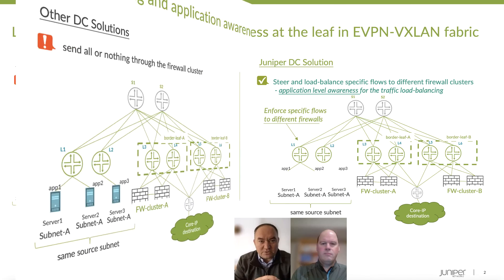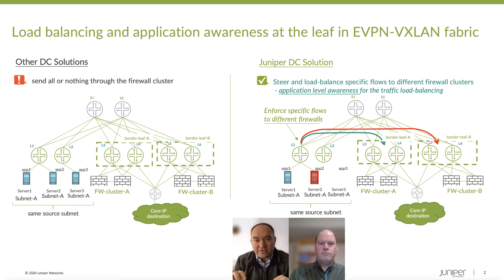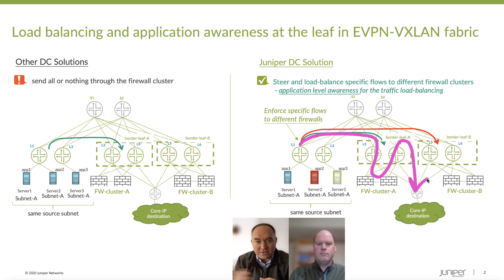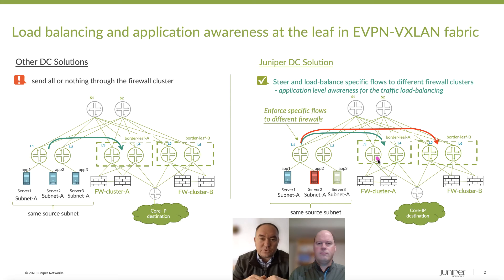Imagine a situation, Kieran, where you have a couple of servers deployed within the same subnet, and each of the servers originates different types of traffic characteristics. In some cases, you may need a tool at the top-of-rack switch level which allows you to steer that traffic to a specific outgoing node. With filter-based forwarding, you can put in place specific rules at the firewall filter level which will steer the traffic to a specific outgoing firewall cluster, for example.